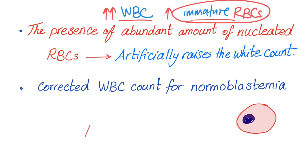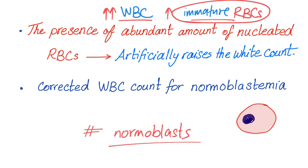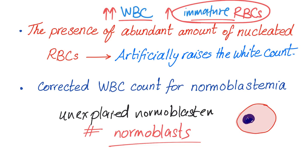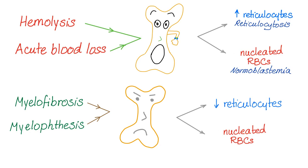The pathologist will write down in the report that they found some normoblasts, or may write normoblastemia — meaning normoblasts in the blood. Normoblasts are the immature red blood cells. If you have hemolysis or acute blood loss, the bone marrow works like crazy — increased hematopoiesis — leading to increased reticulocytes in the blood, which is called reticulocytosis, as well as the presence of nucleated red blood cells in the blood, known as normoblastemia.